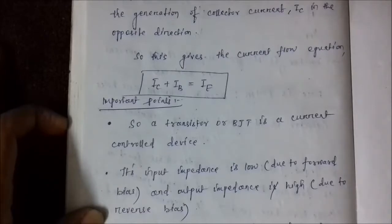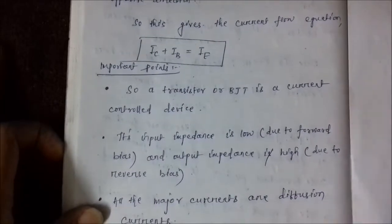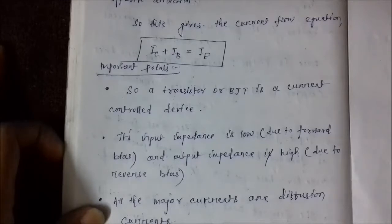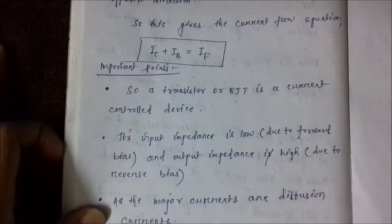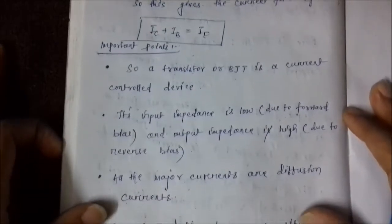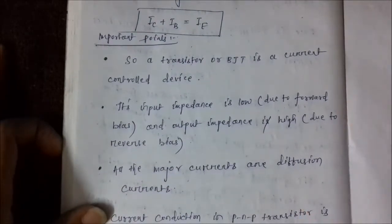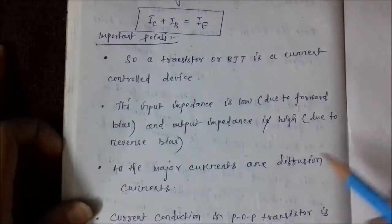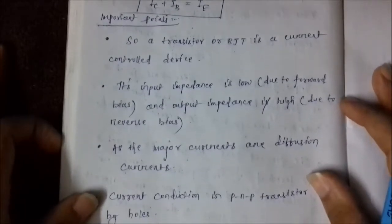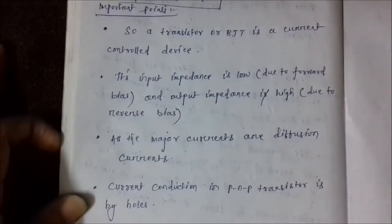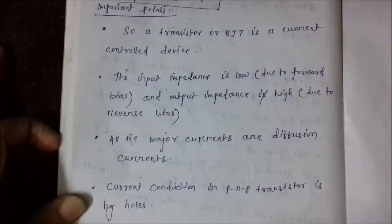The input impedance of a BJT is low, as the input junction is forward biased. Since the output junction is reverse biased, the output impedance will be high. All the major current flow in BJT is due to diffusion rather than drift, so all currents are of diffusion type. Current conduction in PNP transistor is due to holes, whereas in NPN it is due to electrons.